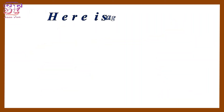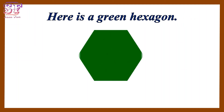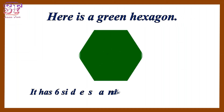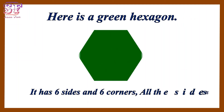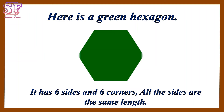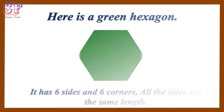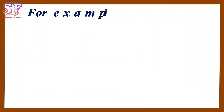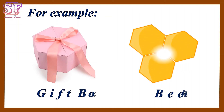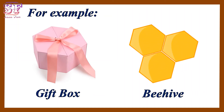Here is a green hexagon. It has six sides and six corners. All the sides are the same length. For example, gift box and beehive.